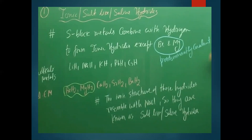Ionic hydrides are generally white or light gray, non-volatile, and non-conducting crystalline solids in solid state. When dissolved in water or in molten state they conduct electricity, but otherwise they are non-conductors.